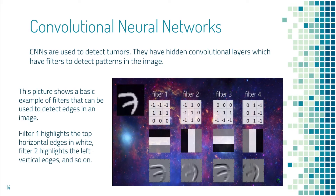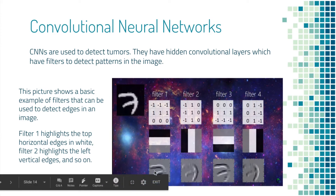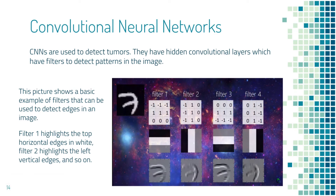As you go deeper and further through the network, these filters become more specific and complicated. This picture shows a basic example of filters that can be used to detect edges in an image using matrices in which the negative ones correspond to black, the ones correspond to white, and the zeros correspond to gray. Filter one highlights the top horizontal edges in white, filter two highlights the left vertical edges, and so on.